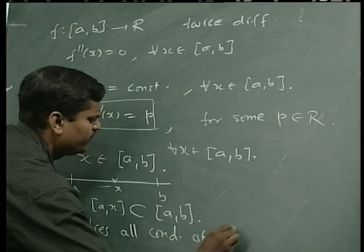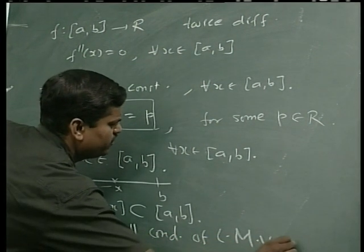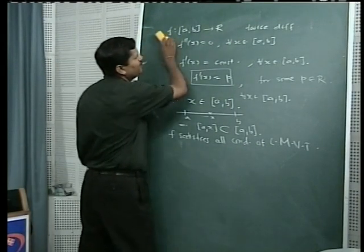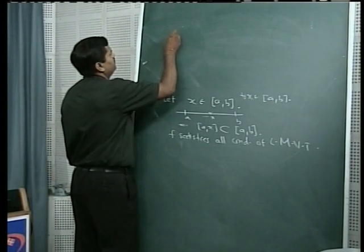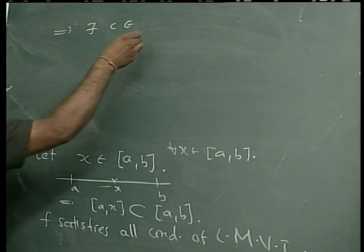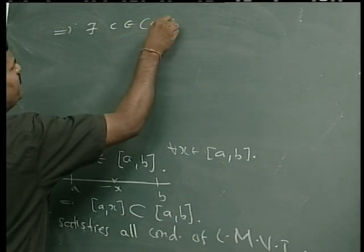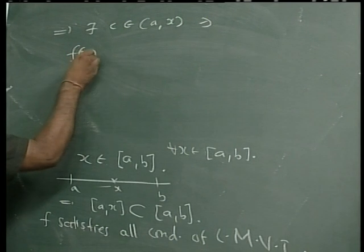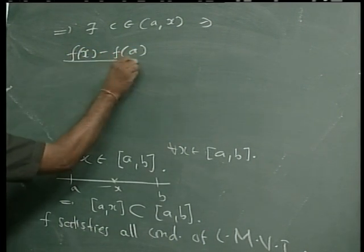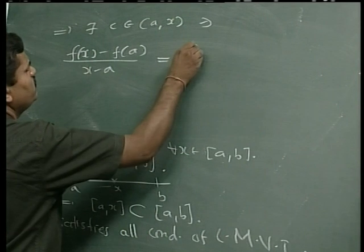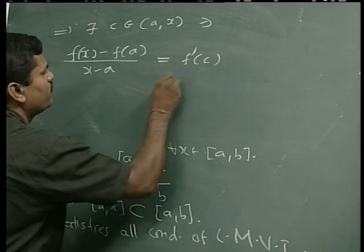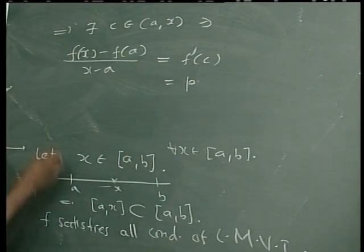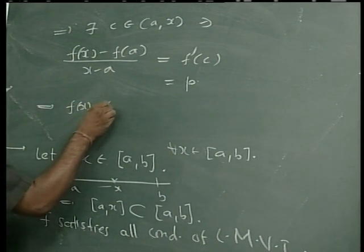All the conditions of Lagrange's Mean Value Theorem are satisfied and therefore by LMVT we can say that there exists some c in the interval a to x such that f(x) minus f(a) upon x minus a is equal to f'(c). But just now we have proved that f'(x) is equal to p for every x, so this is equal to p.